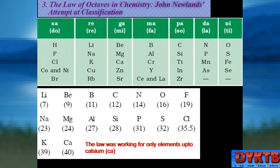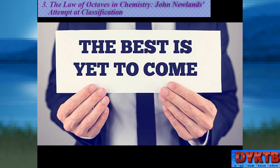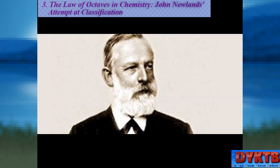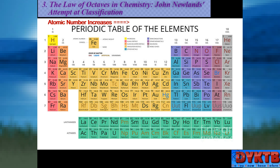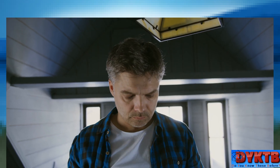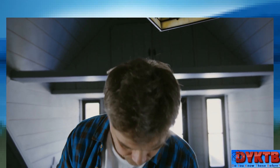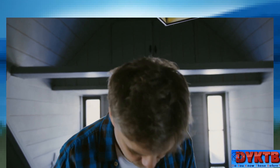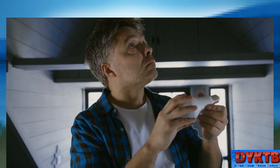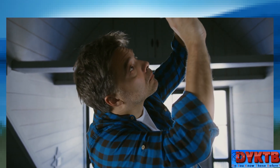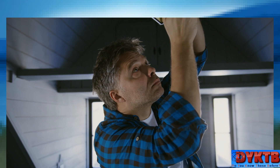However, Newlands' contributions were not in vain. His work provided an early glimpse into the periodicity of elements, a concept that would later be refined and expanded upon by Dmitry Mendeleev and Julius Lothar Meyer. Mendeleev's periodic table, organized based on atomic number and properties, ultimately gained widespread acceptance and is now a cornerstone of chemistry education. While Newlands' law of octaves may not have stood the test of time, it played an essential role in advancing our understanding of element relationships, serving as a stepping stone towards a more comprehensive periodic table.